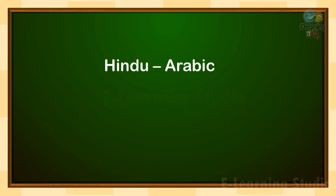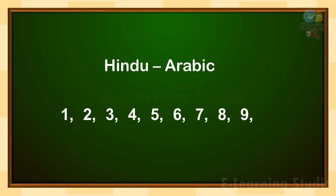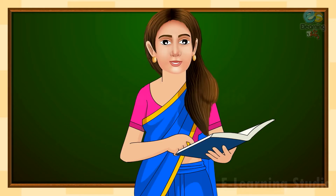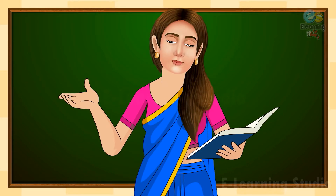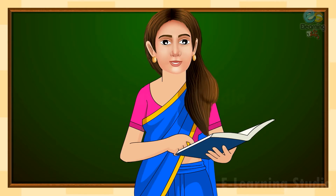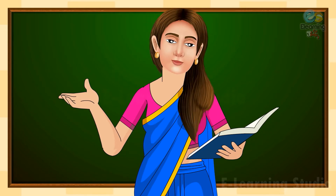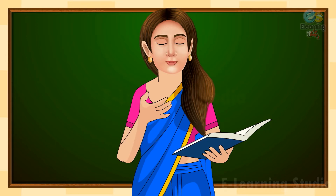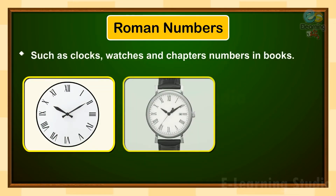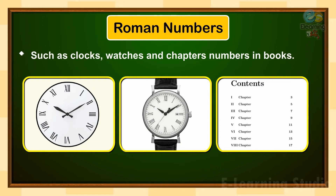So children, as we know, the Hindu-Arabic numeration system uses the digits 1, 2, 3, 4, 5, 6, 7, 8, 9, 0. Long ago, the people of Rome had a number system using letters, and we see these Roman numerals even today in special places, such as clocks, watches, and chapter numbers in books.